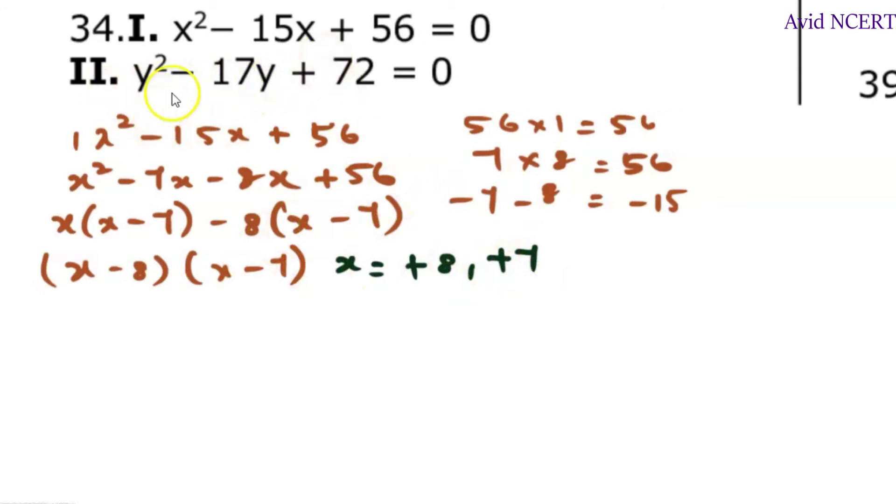Now find the factors for the second equation which is y square minus 17y plus 72. So again, it is y square minus 17y plus 72. 72, 1 times is 72, 9 times 8 is 72.